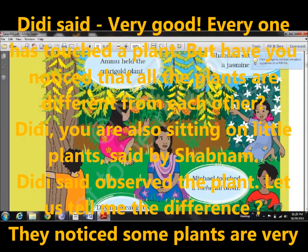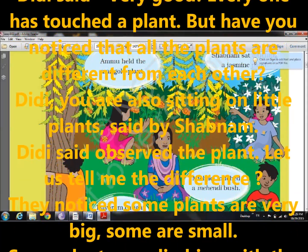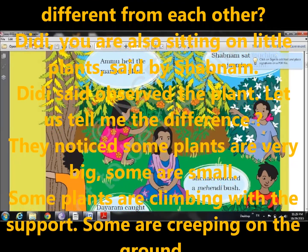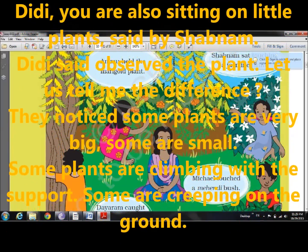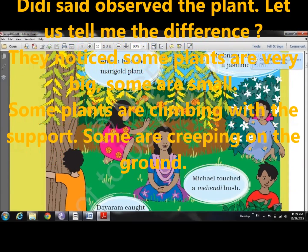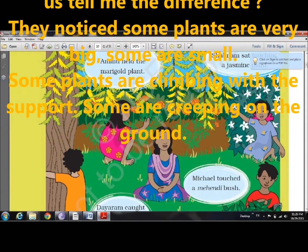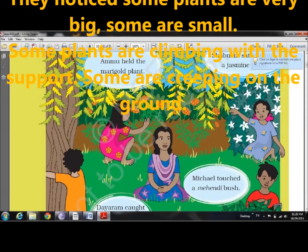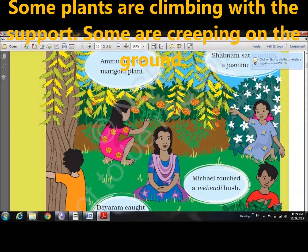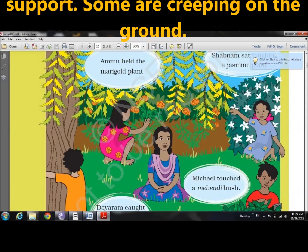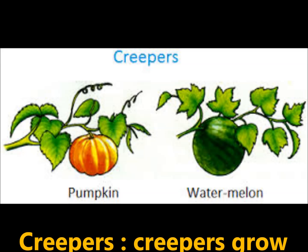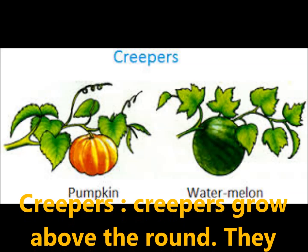Didi said observe the plants and let me tell you the differences. The children started noticing that some plants are very big, some plants are small, some plants are climbing, and some plants are creeping on the ground. Didi said now see — there are different types of plants: creepers, climbers, herbs, shrubs, and trees. Let us start the discussion about these types of plants.